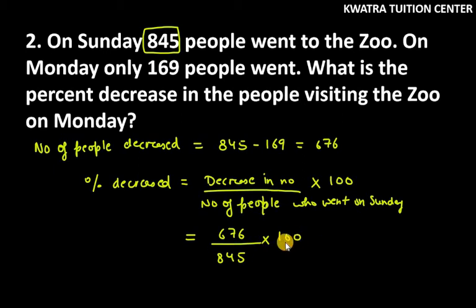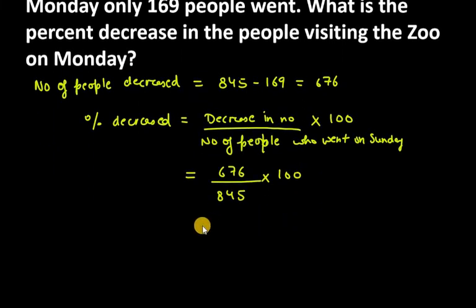Into hundred. 676 over 845 into 100. So first of all, multiply them. 67,600 will be over 845. After that, we can reduce this.